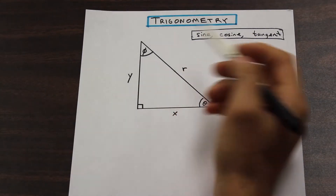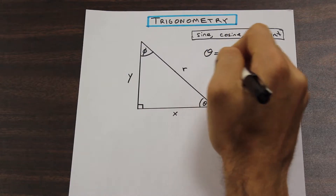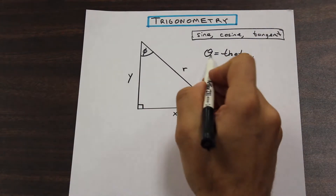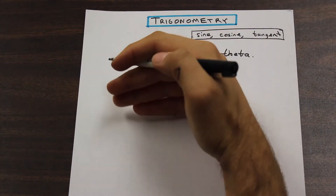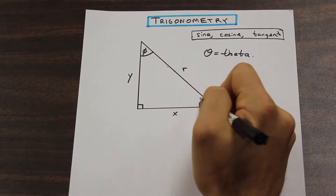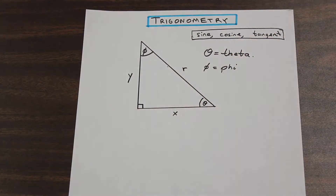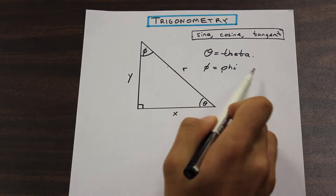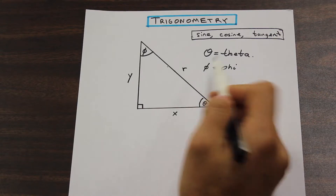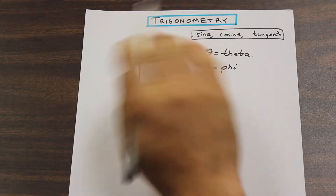So let's take a look at our triangle here, and we're going to work from this angle here — from theta. That sign there, we're going to call that theta. That's a Greek letter in the Greek alphabet, and usually theta is used to represent an angle — a measure of the arc distance between two lines. I also wanted to show you the sign phi, which is also another commonly used symbol. If you have to solve a problem using two angles, you don't want to use the same symbol twice, so you might use phi or theta.